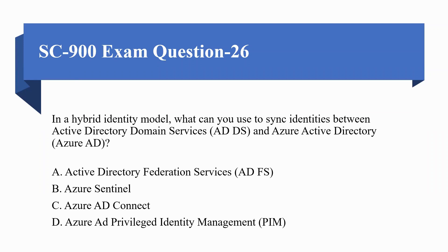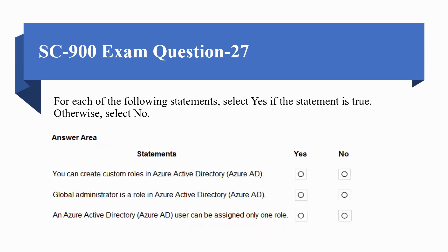Next question: In a hybrid identity model, what can you use to sync identities between Active Directory Domain Services and Azure Active Directory? Options are: A) Active Directory Federation Services, B) Azure Sentinel, C) Azure AD Connect, D) Azure AD Privileged Identity Management. The correct option is C: Azure AD Connect.